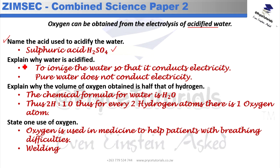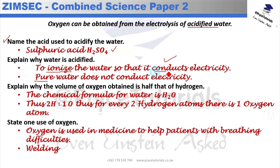They also ask why the water is acidified. We acidify the water to ionize it, because pure water does not conduct electricity. By adding sulfuric acid we introduce ions into the water so that it is able to conduct electricity.